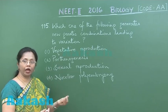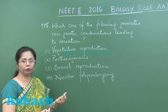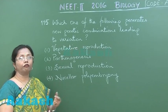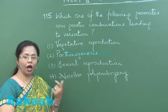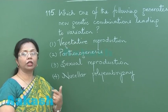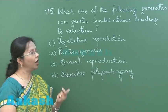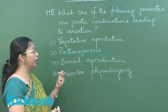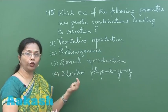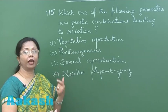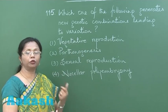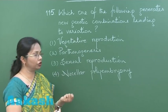Parthenogenesis is again asexual reproduction where gametes are formed but they are not fusing together, and in haploid organisms the gametes would be formed just by mitosis.